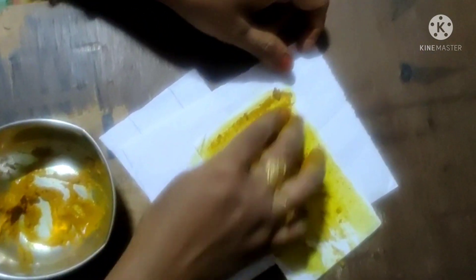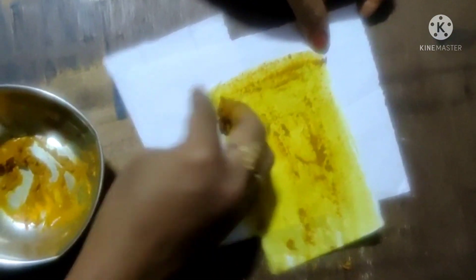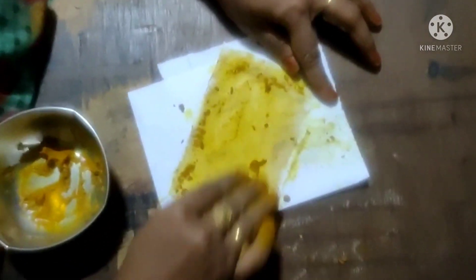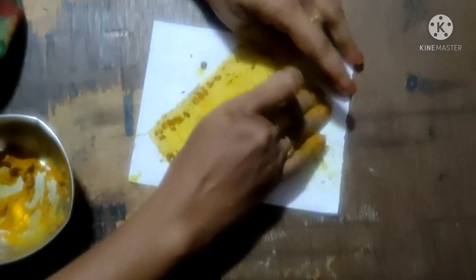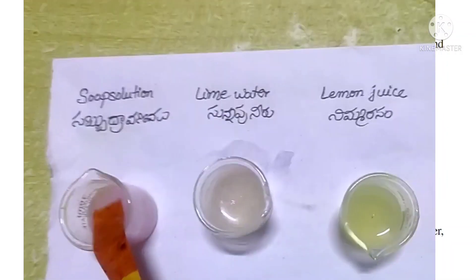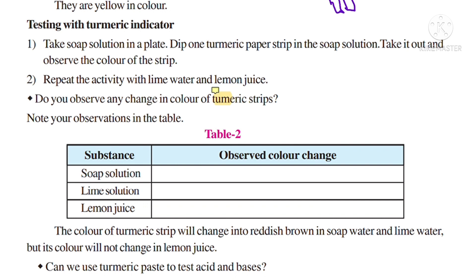These paper strips are now ready to use as an indicator. The turmeric strips are always yellow in color. Testing with the turmeric indicator: take a soap solution in a plate, dip one turmeric strip in the soap solution, take it out, and observe the color. The strip, which is generally yellow, will turn reddish brown when placed in soap solution.